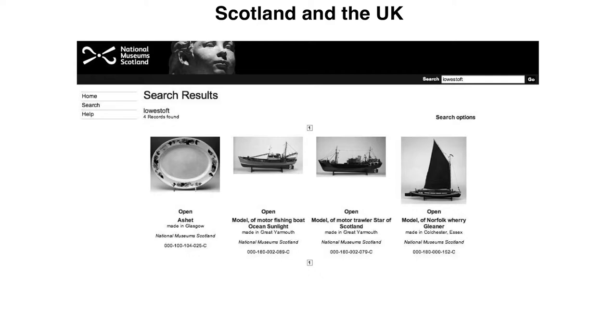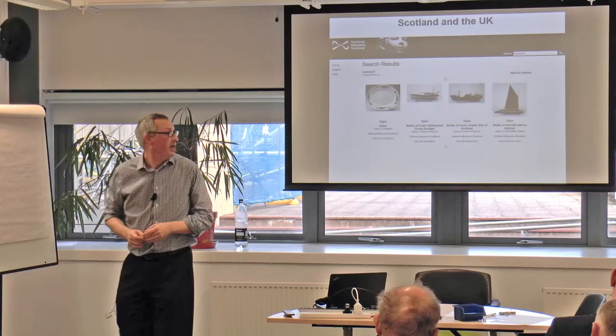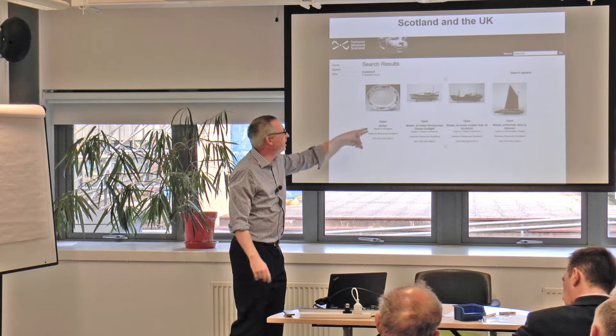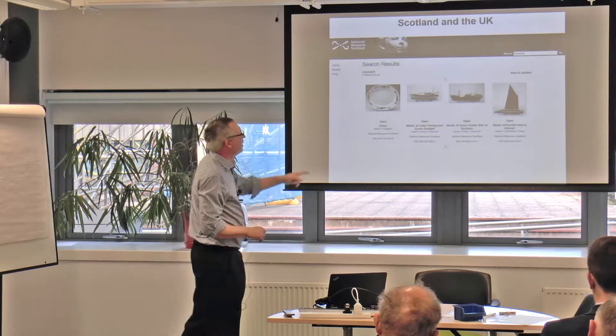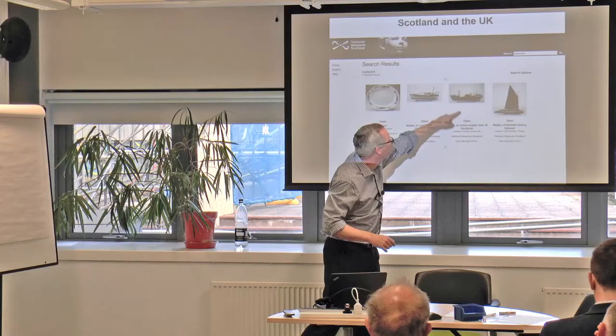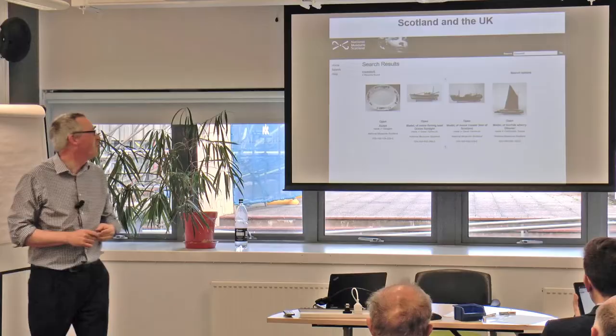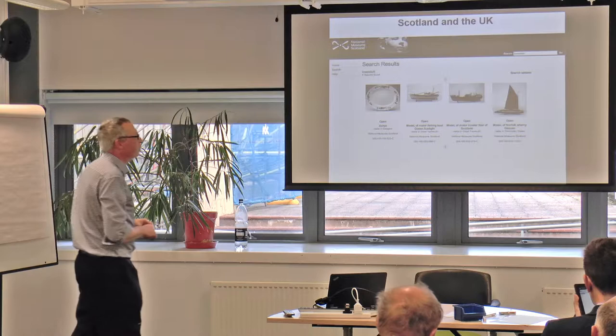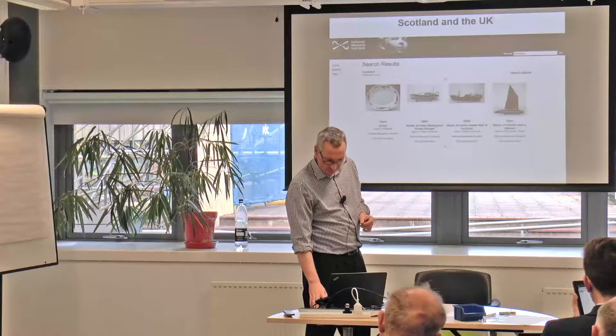This came about when I had to do a presentation in Edinburgh just before the Scottish referendum, and I wanted to see if there were any connections between my hometown and what was in the Museum of Scotland's collection. I found a plate — a particular type used in Scotland but made in Lowestoft and decorated in Glasgow. And these model boats. This one, the Star of Scotland, is significant in the fishing industry — it was the first boat that gave fishermen decent accommodation so they could go out into the North Sea for longer periods.